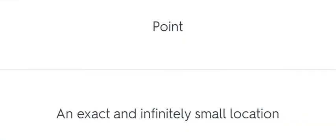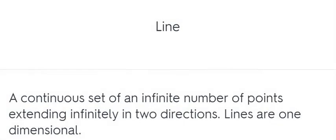Point. An exact and infinitely small location. Line. A continuous set of an infinite number of points extending infinitely in two directions. Lines are one-dimensional.